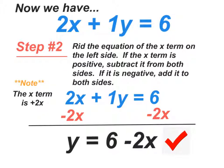Now the second step that we have is we need to rid the equation of the x term on the left side. And here we go. 2x is over here on the left-hand side. If the x term is positive, which 2x is, you subtract it from both sides. If it were negative, you'd add it to both sides.